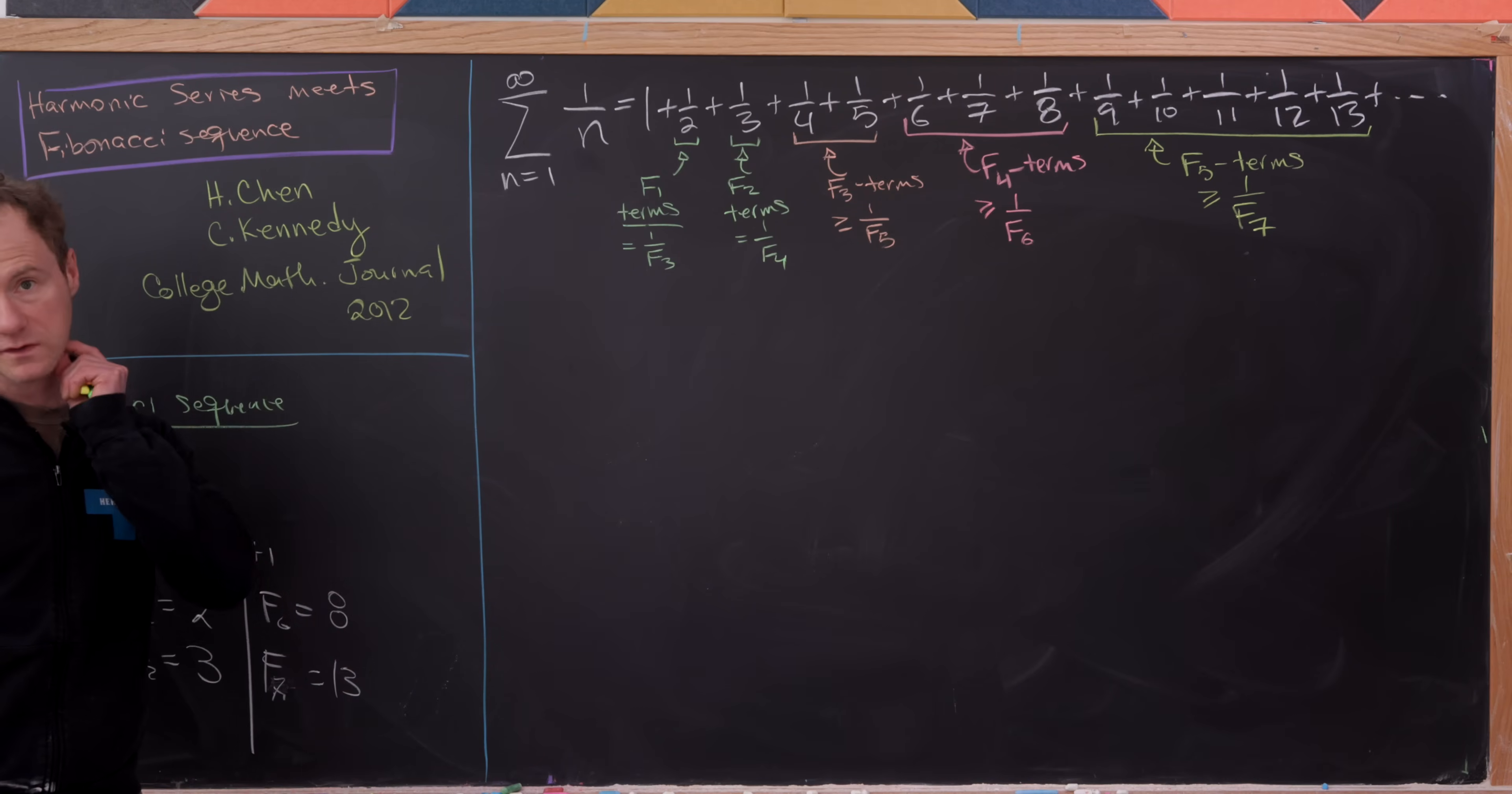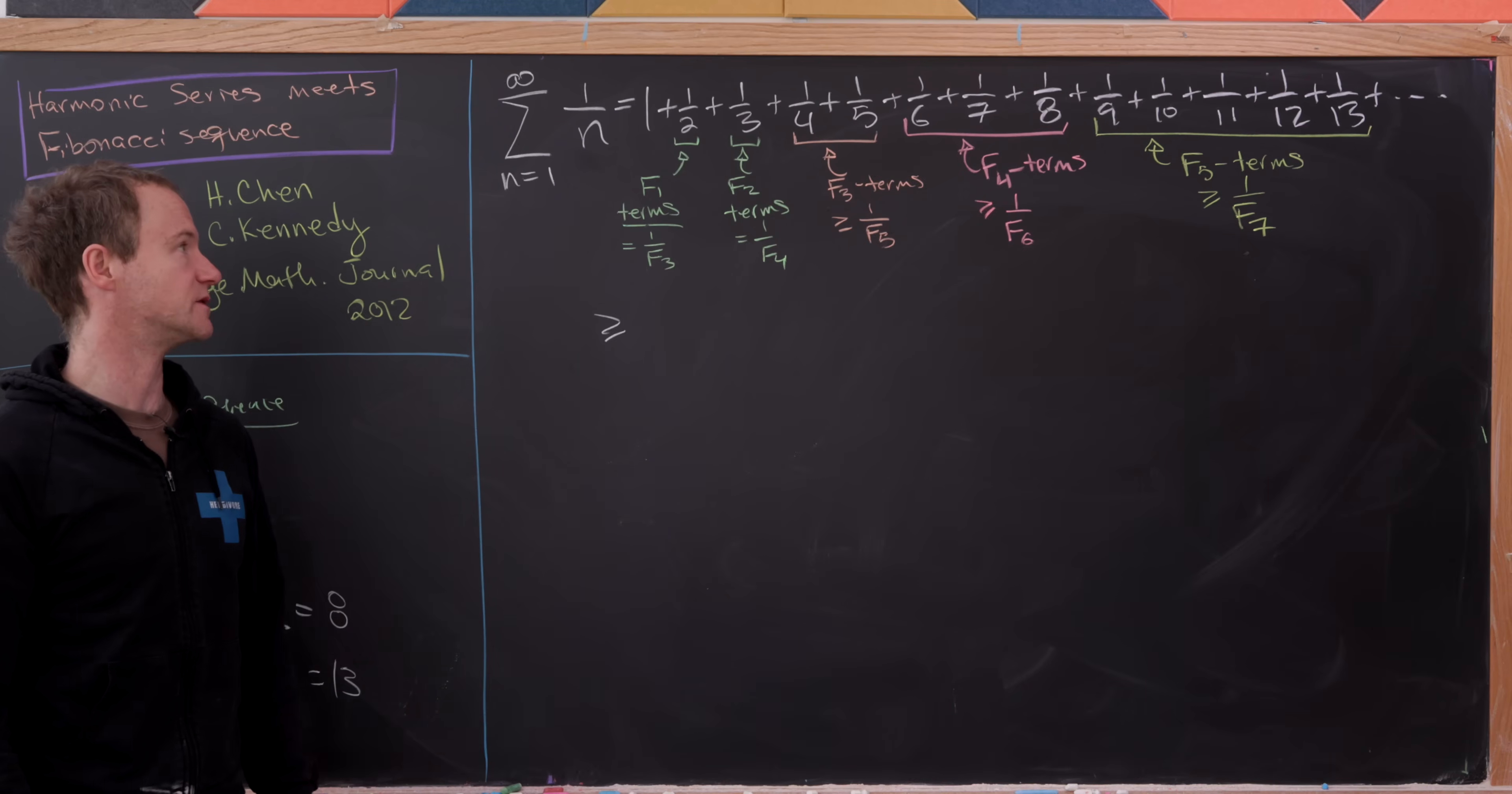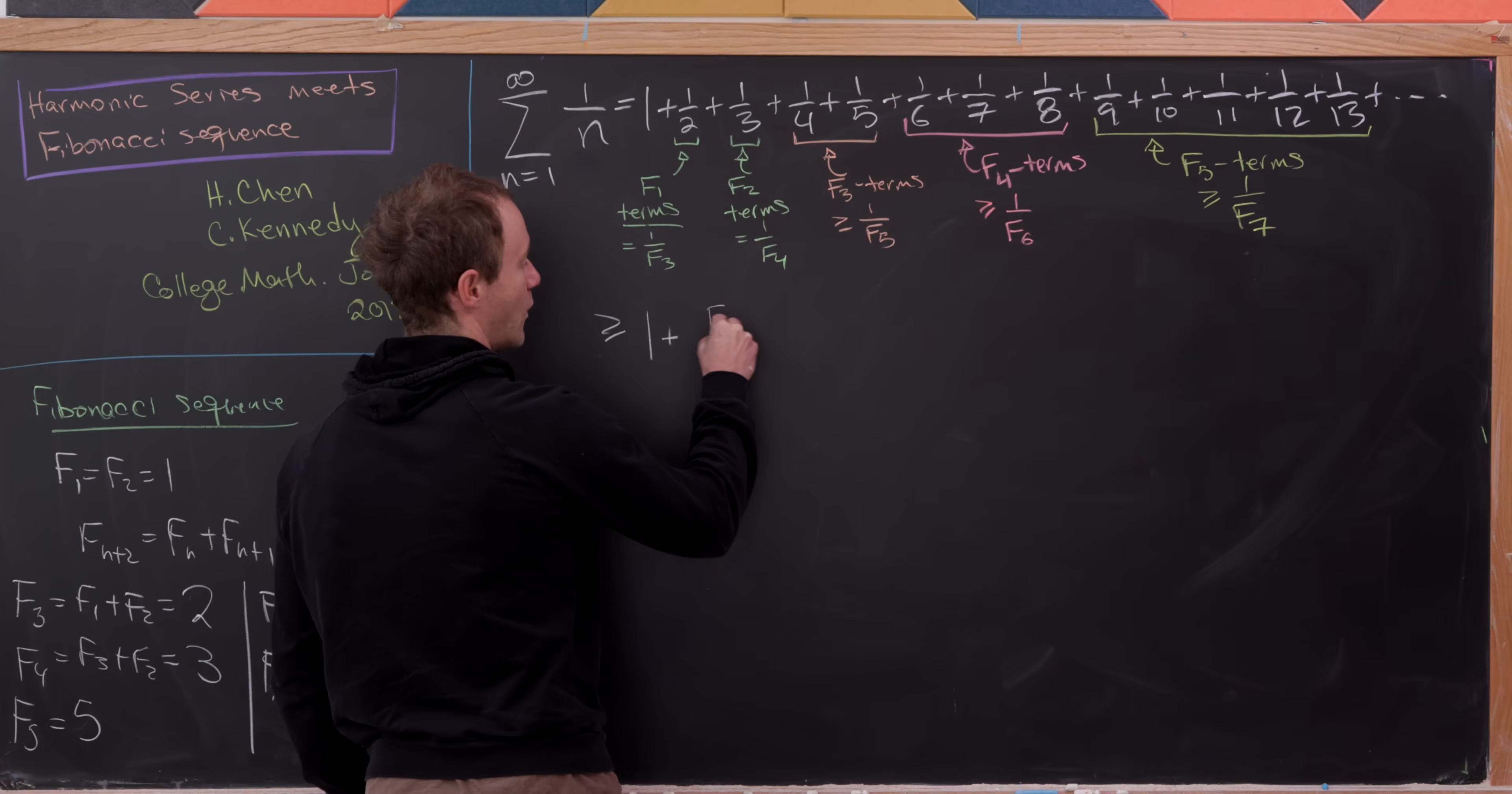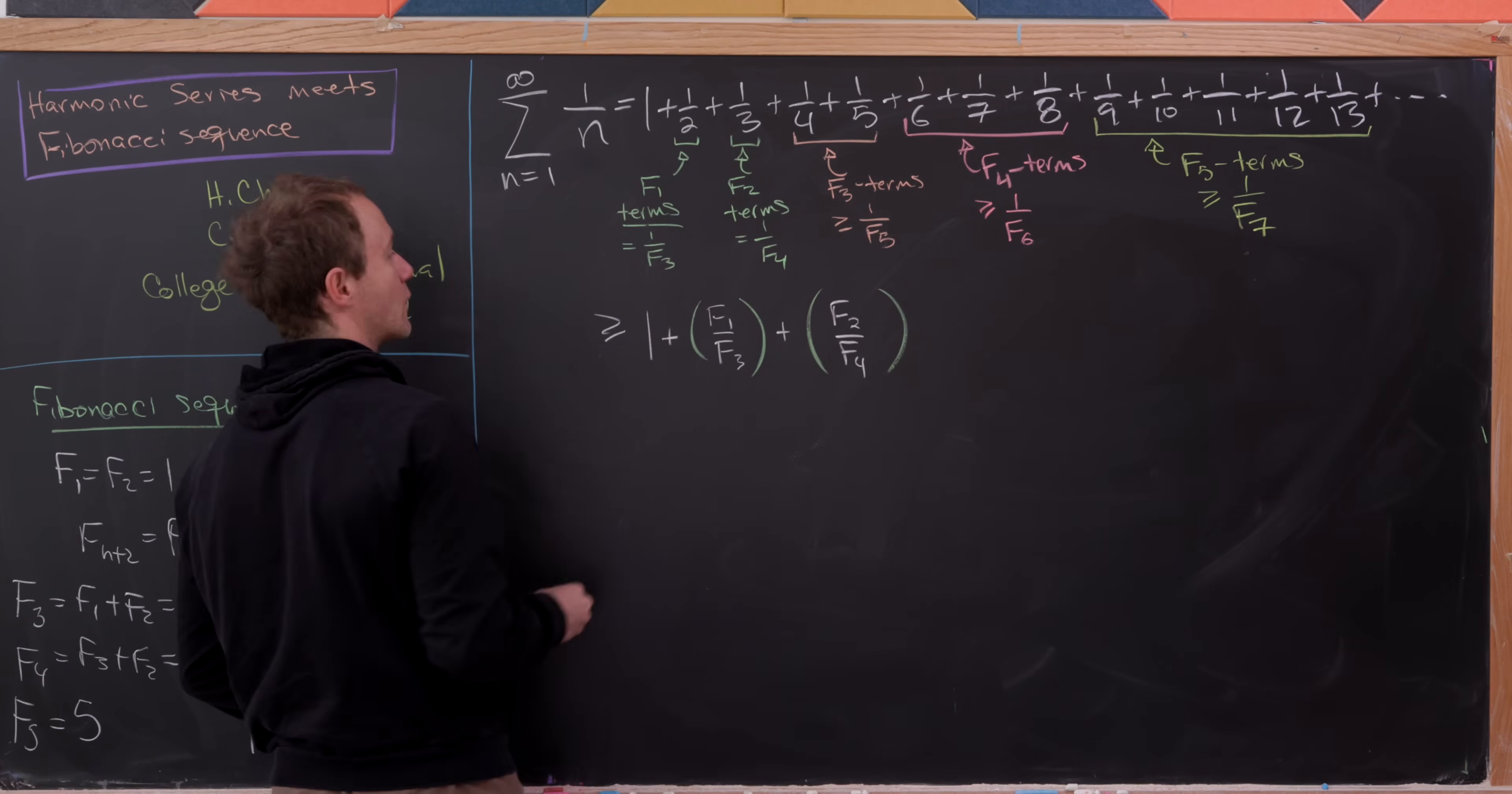But that means our whole series is going to be bigger than or equal to the series that we form by making the replacement with these numbers right here for each of the terms in those blocks. So let's do that. So this is going to be bigger than or equal to 1 plus, and now I'm going to write this as F1 over F3. So that's that first block. And then let's have the same thing for the second block, but that'll be F2 over F4. That's our one third.